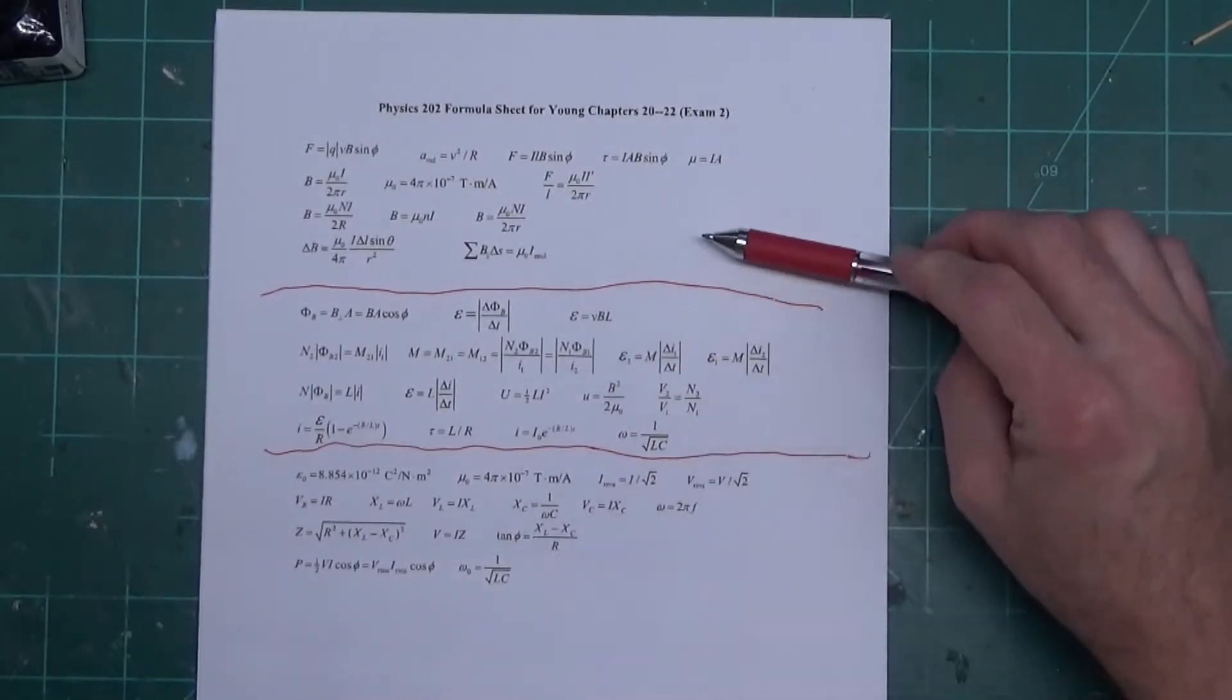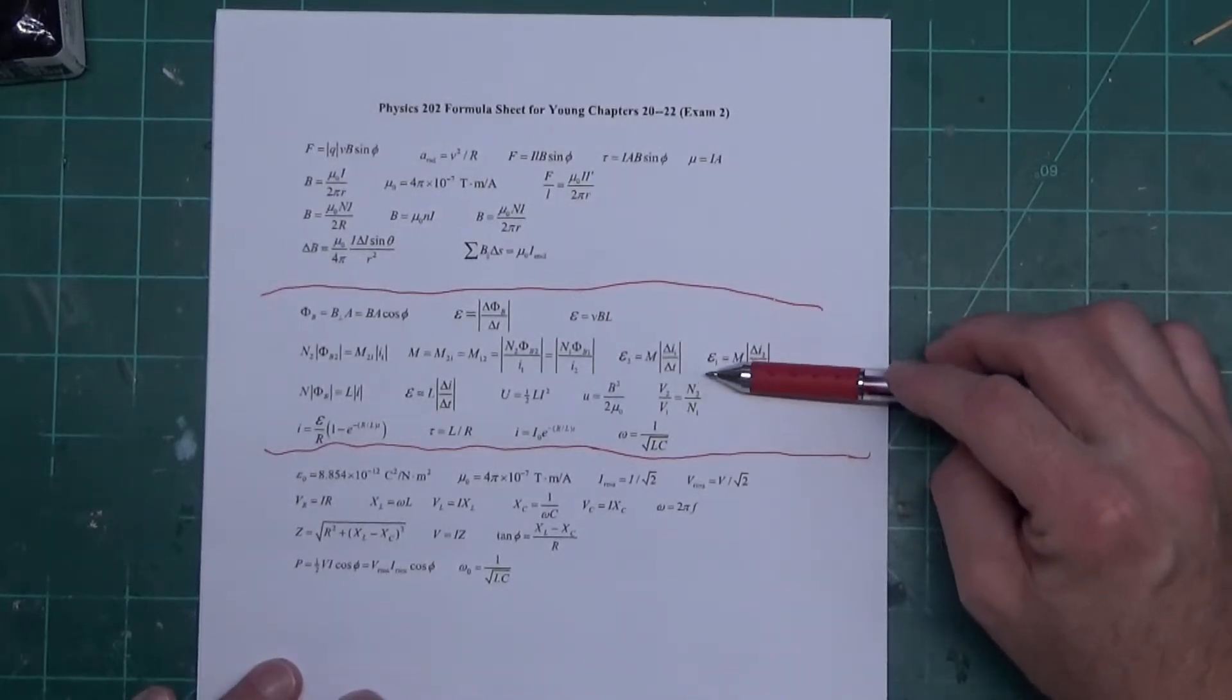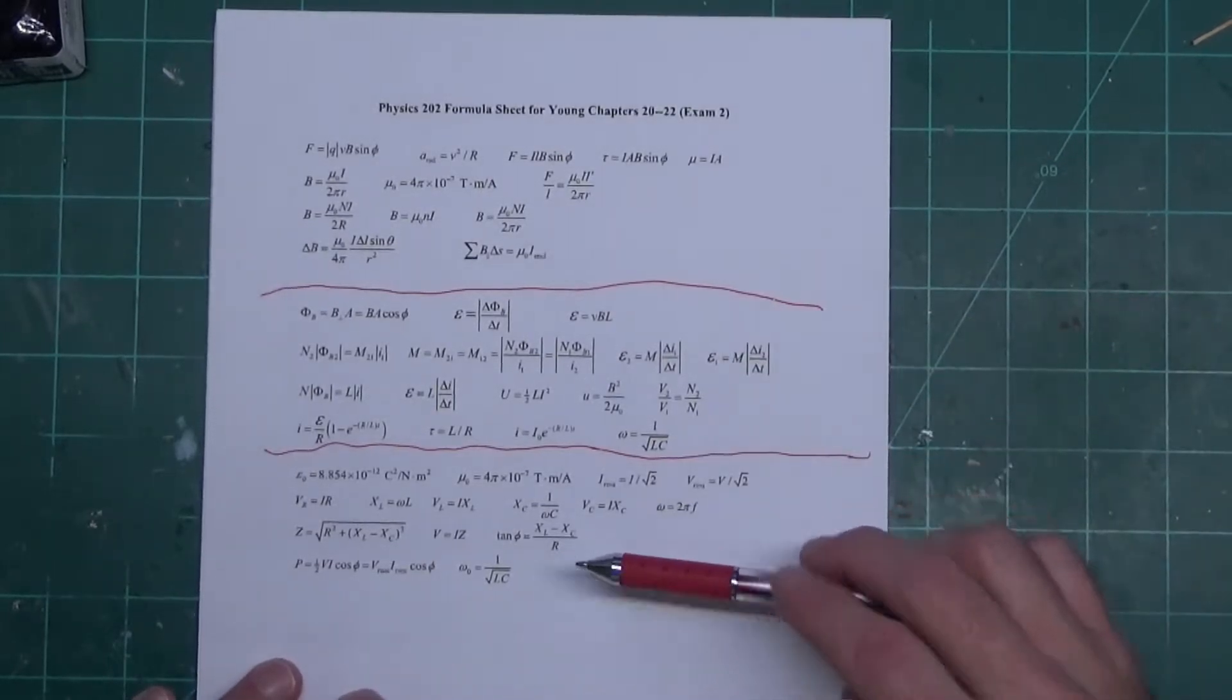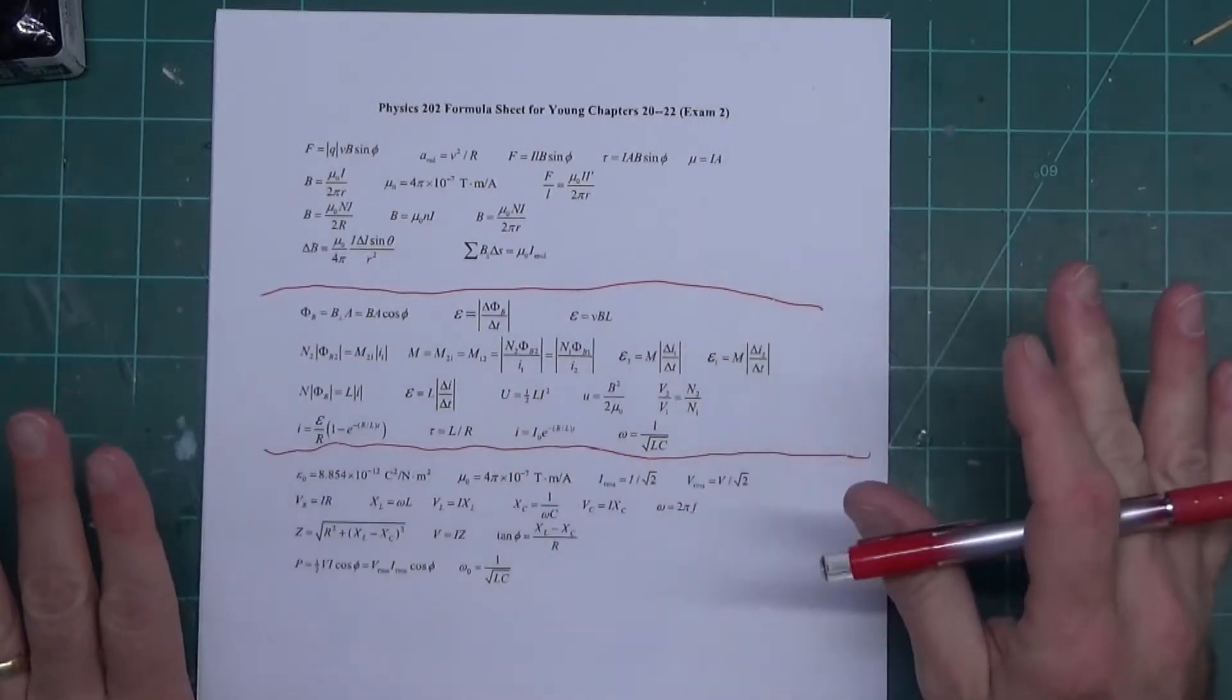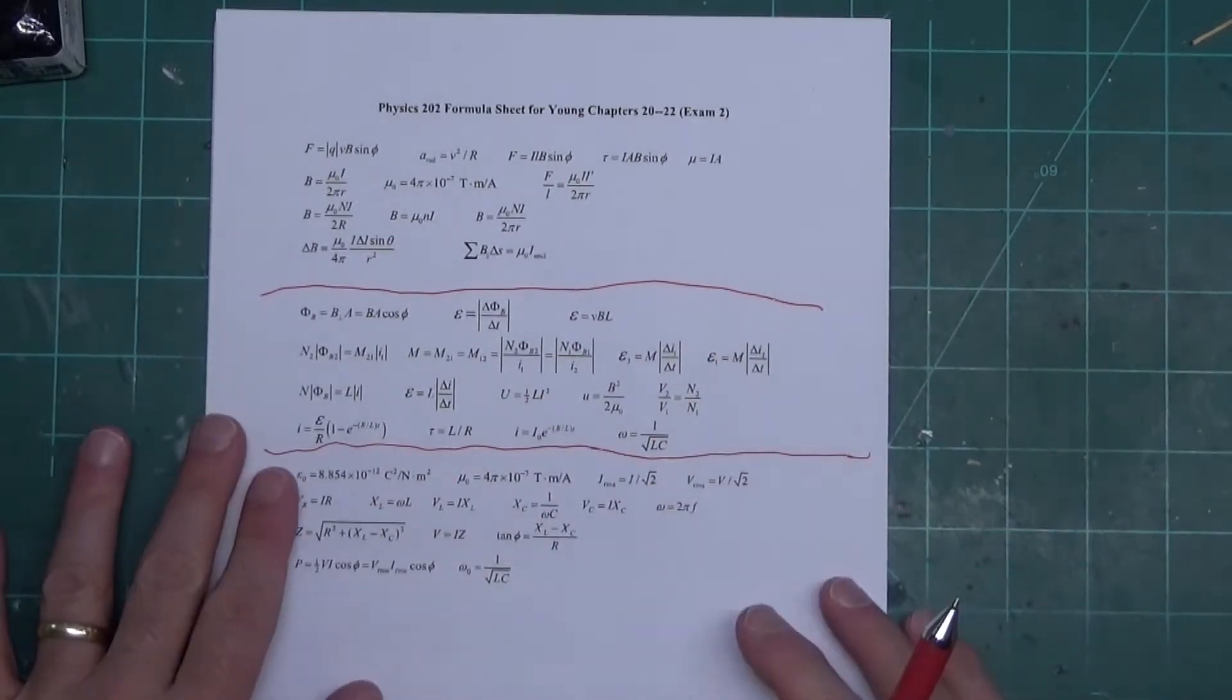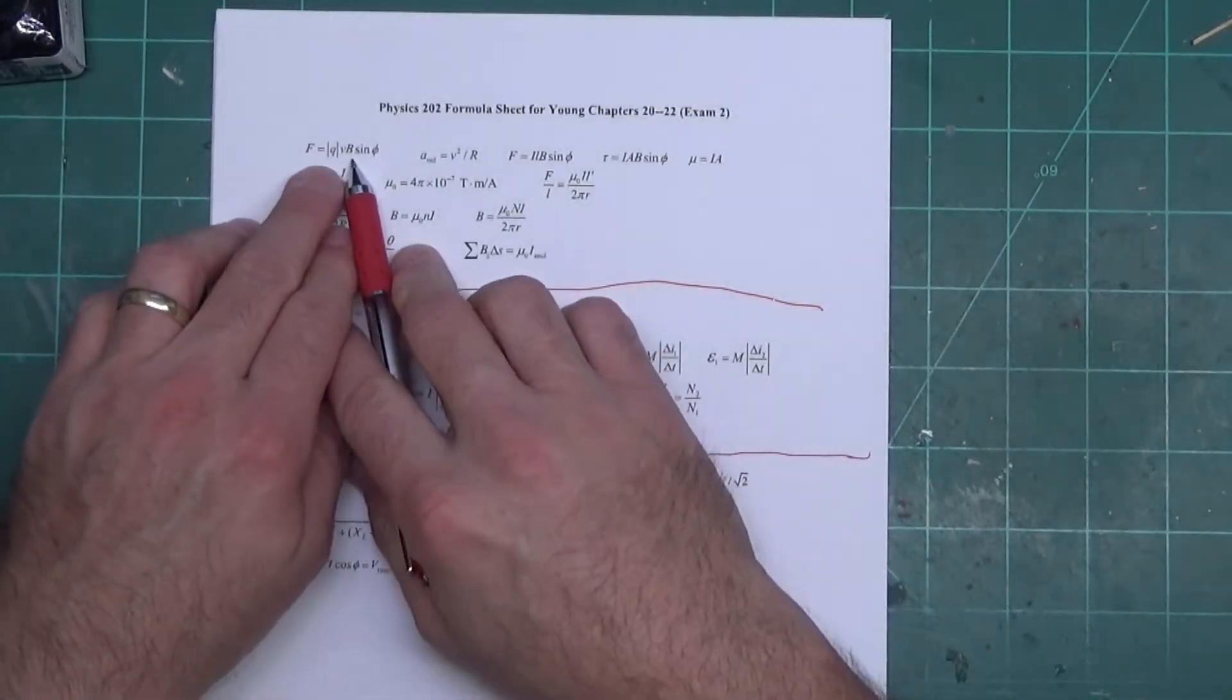Magnetic fields and forces, magnetic induction, and AC circuits at the bottom. Now, no mention of right-hand rules anywhere, so you're definitely going to have to know those. Second thing, the first equation up here is for the force on a positive charge in a magnetic field.